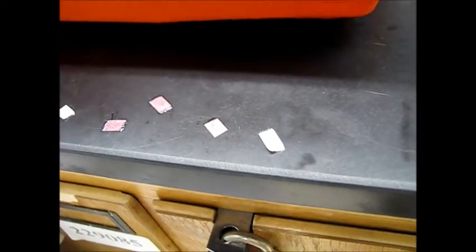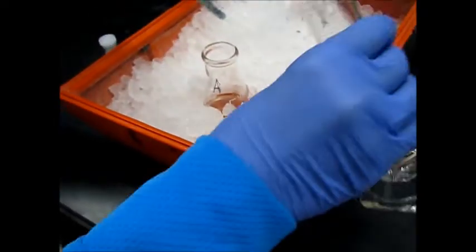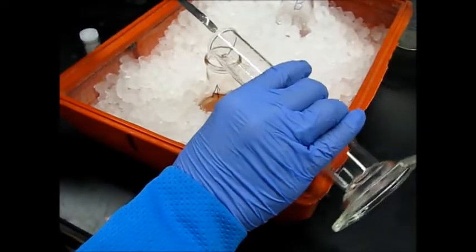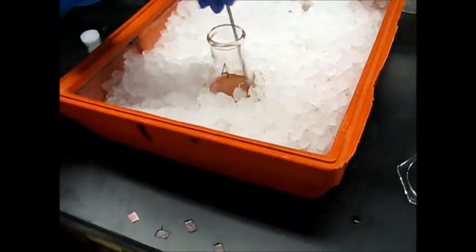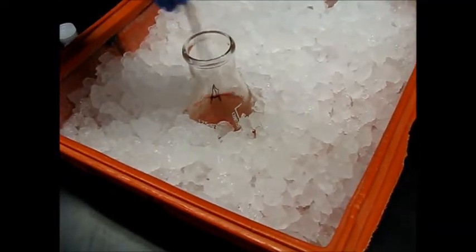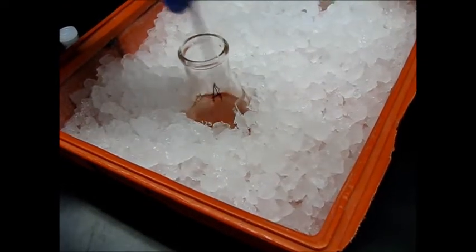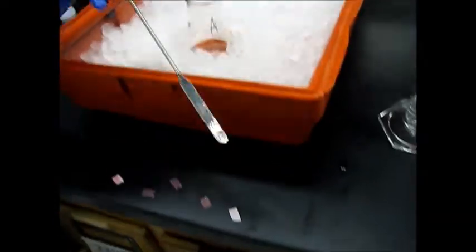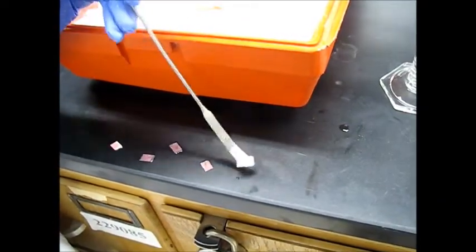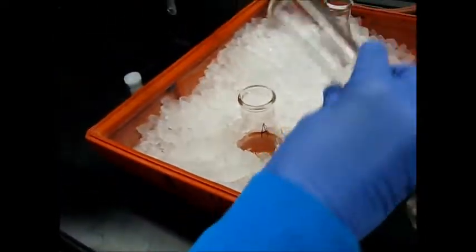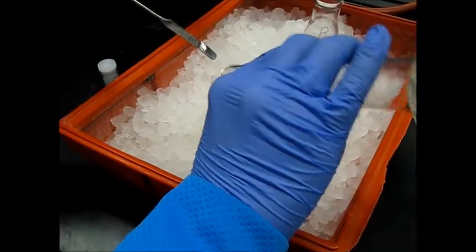Then we can test the pH. It's still pretty red but it is definitely getting lighter. Add some more sodium hydroxide. Test the pH. Still red, kind of pink. I will add the rest of the sodium hydroxide that I have in the cylinder.